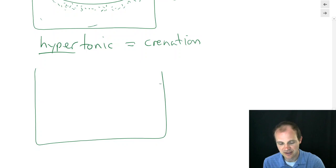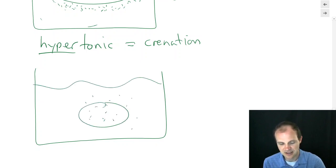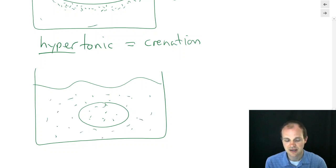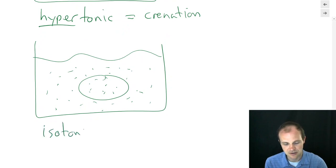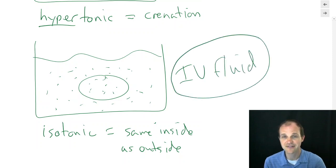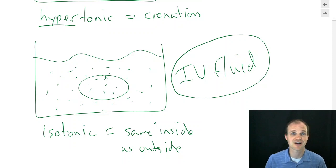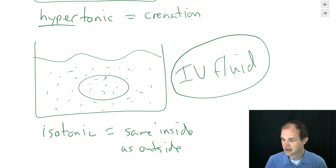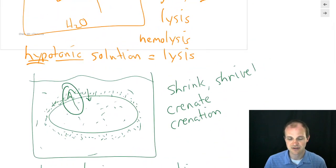If you don't want the cells to do anything, you make sure the inside and outside have roughly equal concentrations. That's called an isotonic solution — the same inside as outside, so nothing happens to your cells. IV fluid is a great example: you want to make sure it won't shrink or burst cells, so IV fluids are specifically designed to be isotonic, matching the concentration of the cells around them.